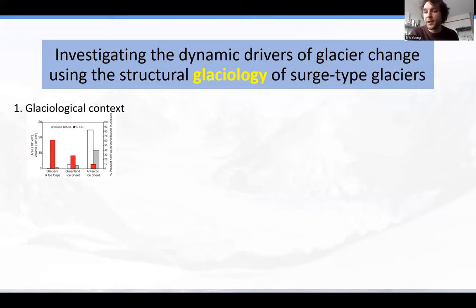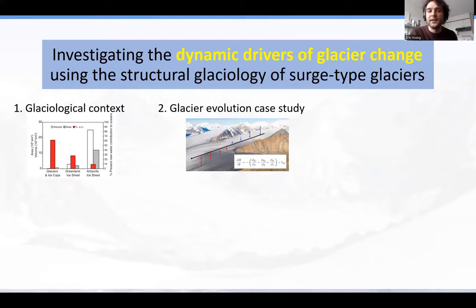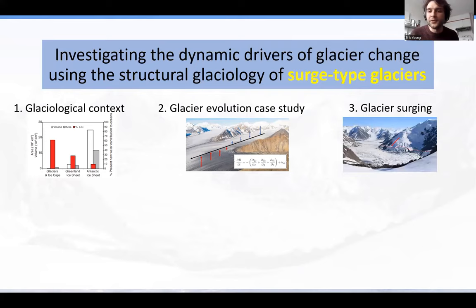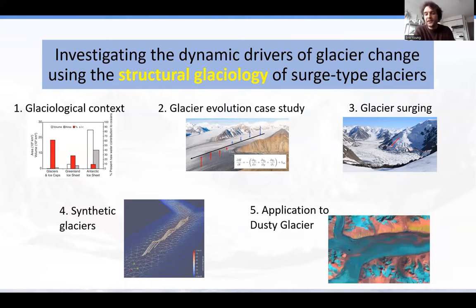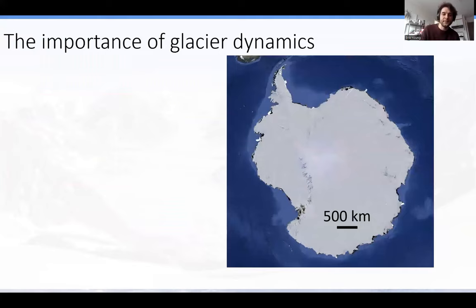The first thing I want to talk about is the glaciological context — why do we care about glacier dynamics? Then we'll take a detour to look at how a non-surge-type glacier evolves, understanding basic glacier behavior before introducing the more complex behavior of glacier surging. We'll then talk about surging itself and its relation to the folds, followed by a fully synthetic 3D modeling study. I'll end on ongoing work exporting that method to the Dusty Glacier.